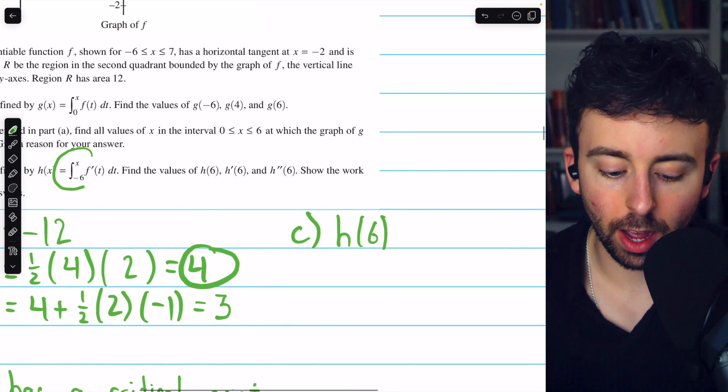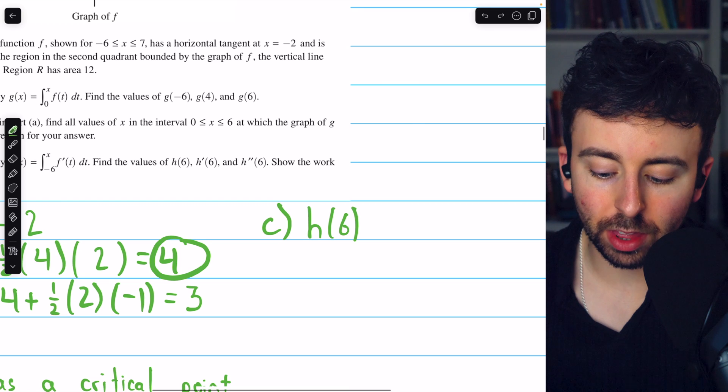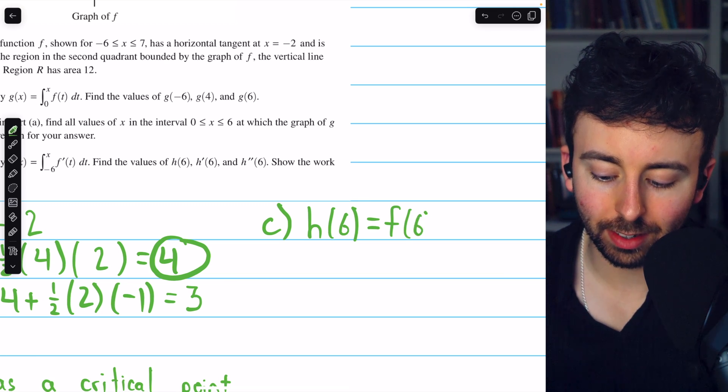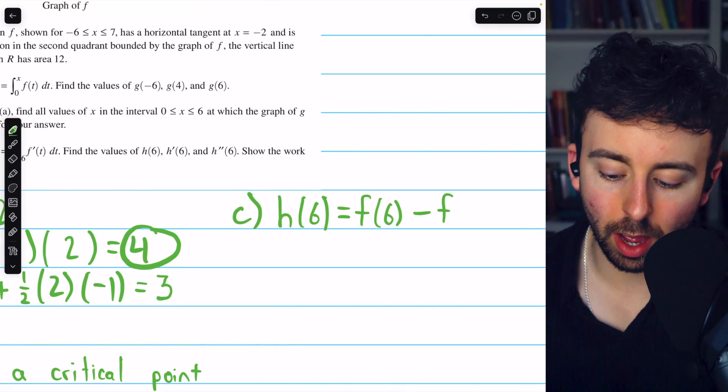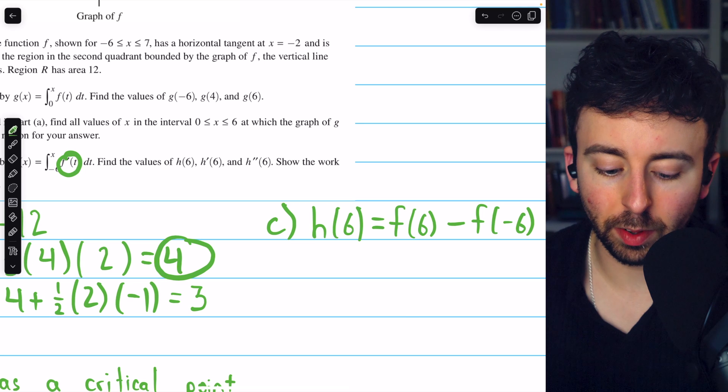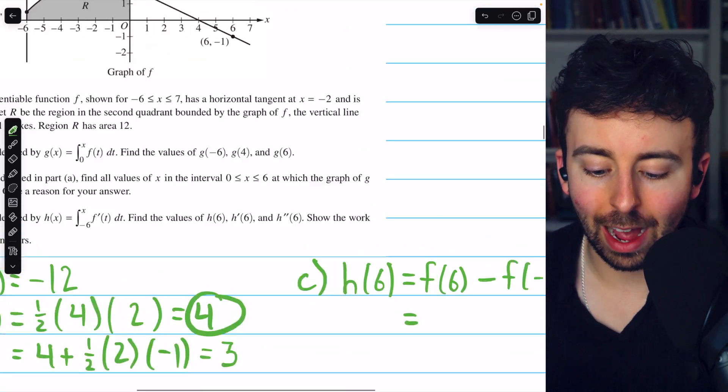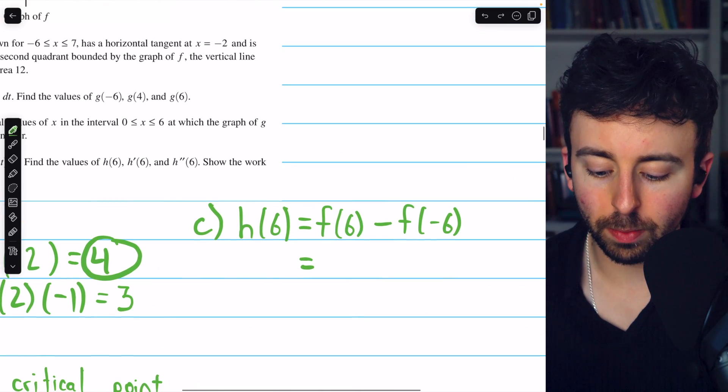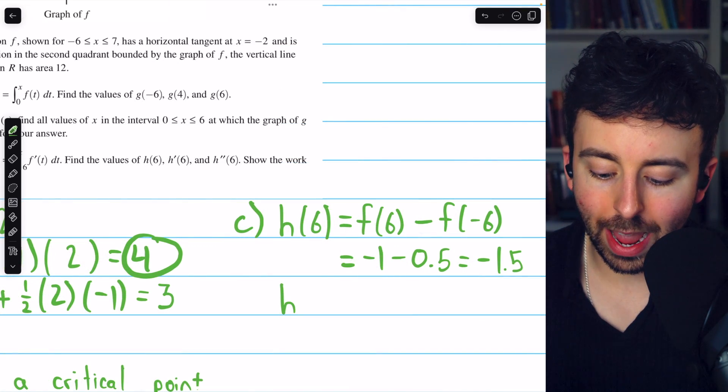h is an integral of f prime from negative 6 to x. So if x, the input, is 6, by the fundamental theorem of calculus, we can evaluate this integral as f of 6, so that's the antiderivative of the integrand evaluated at this input, f of 6 minus f of the lower bound negative 6. This is how we evaluate definite integrals. We take the antiderivative of the integrand and then evaluate it at the upper bound and the lower bound and subtract them. We can find these values from the graph. f of 6 is given as negative 1, and f of negative 6 we see is 0.5. So this is going to be negative 1 minus 0.5, and so the answer is negative 1.5.